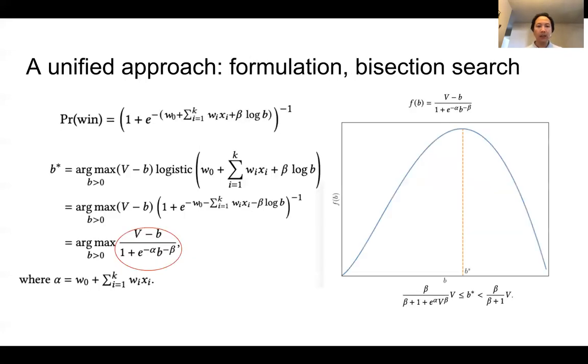There are many different choices for the model. In this paper, we choose the simplest one, namely logistic regression, with the exception that the bid price is transformed logarithmically. The reason for the transformation is that we want the winning rate to go to zero when the bid price goes to zero.